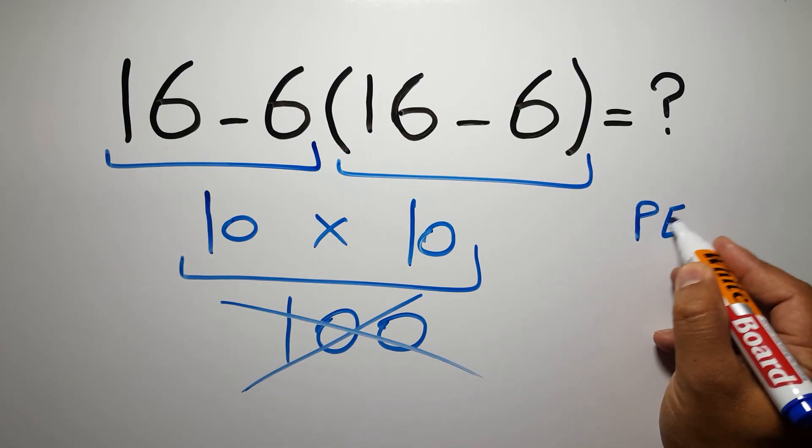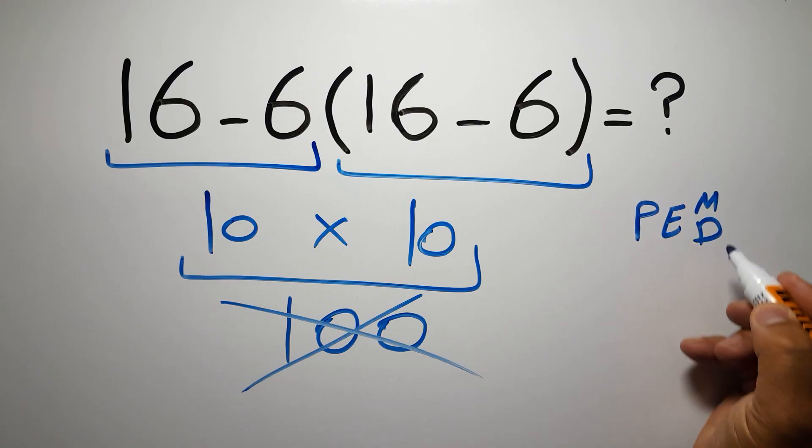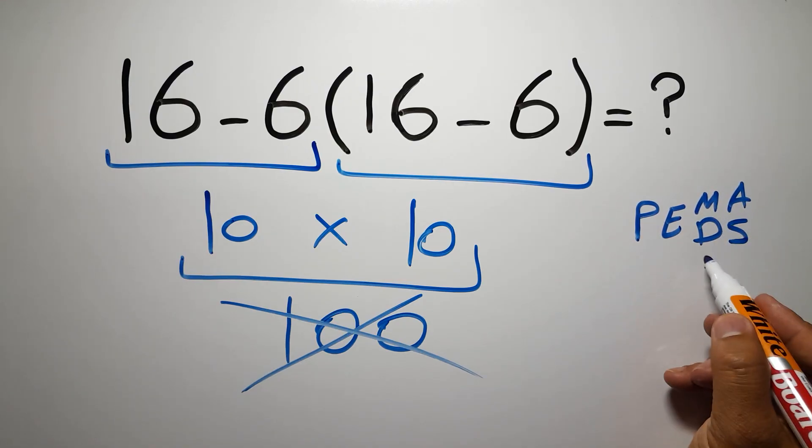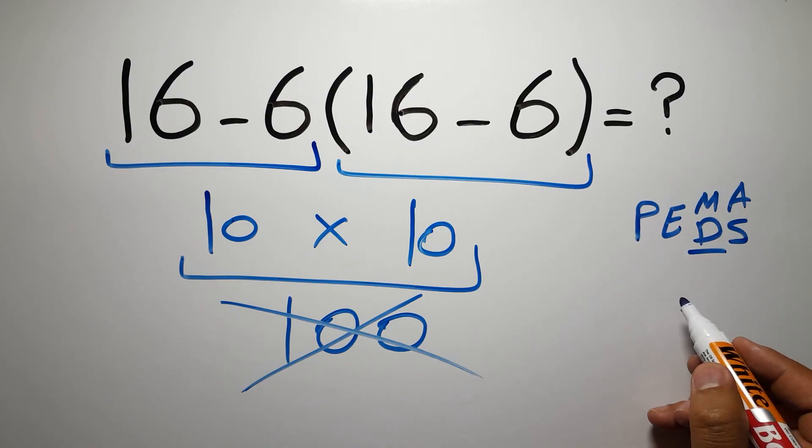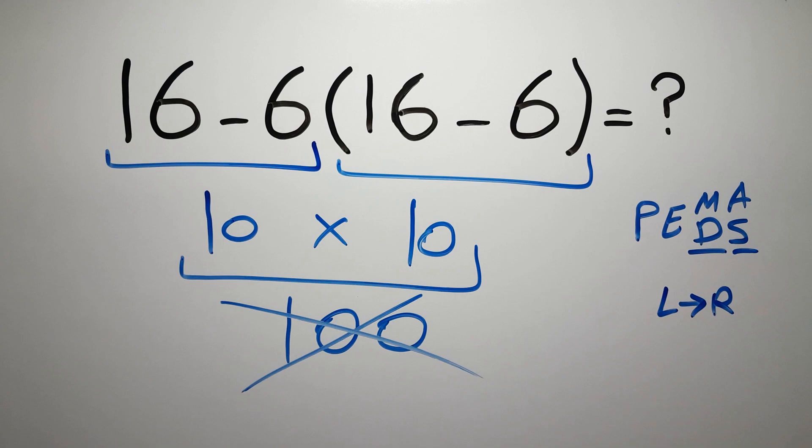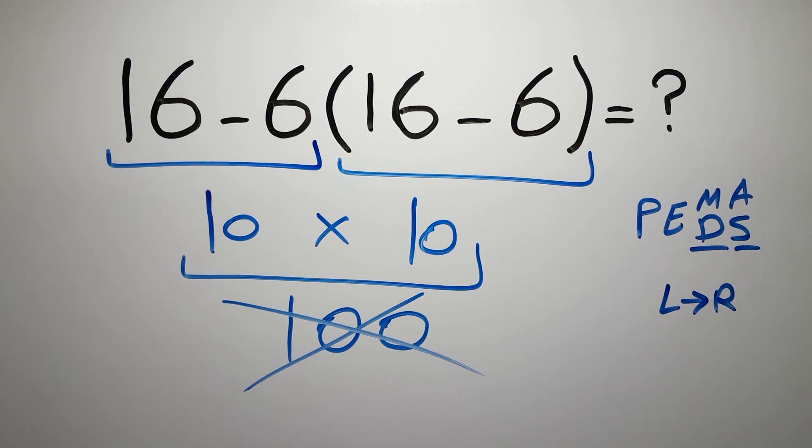Then exponents, then multiplication or division, and finally addition or subtraction. Remember that multiplication and division have equal priority and we have to work from left to right, and the same applies to addition and subtraction.